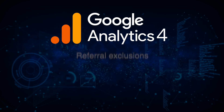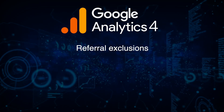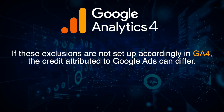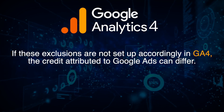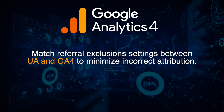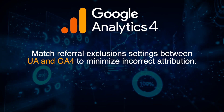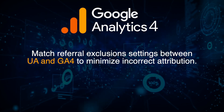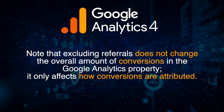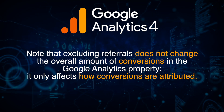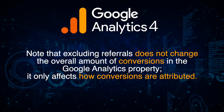Finally, referral exclusions. Exclusions set in Universal Analytics can affect conversions attributed to Google Ads. If these exclusions are not set up in Google Analytics 4, the credit attributed to Google Ads can differ significantly. To fix this, match referral exclusion settings between Universal Analytics and Google Analytics 4 to minimize incorrect attribution. Keep in mind this doesn't affect your overall conversions — it just affects how conversions are being attributed inside the report.